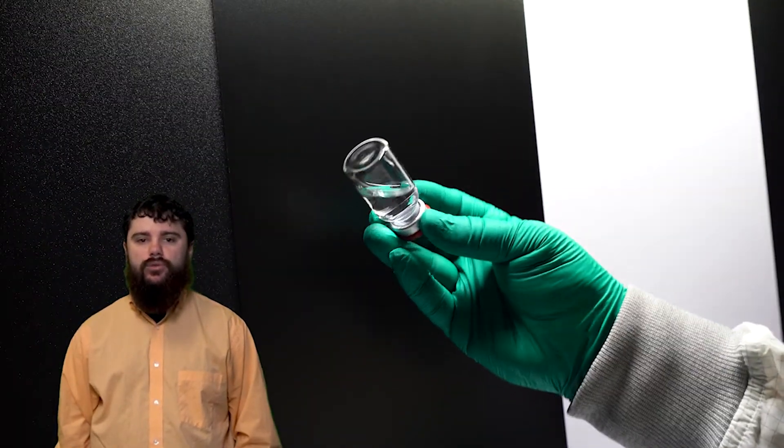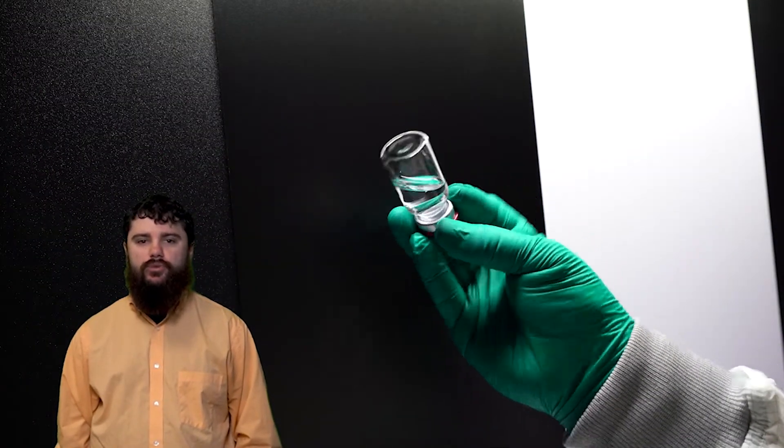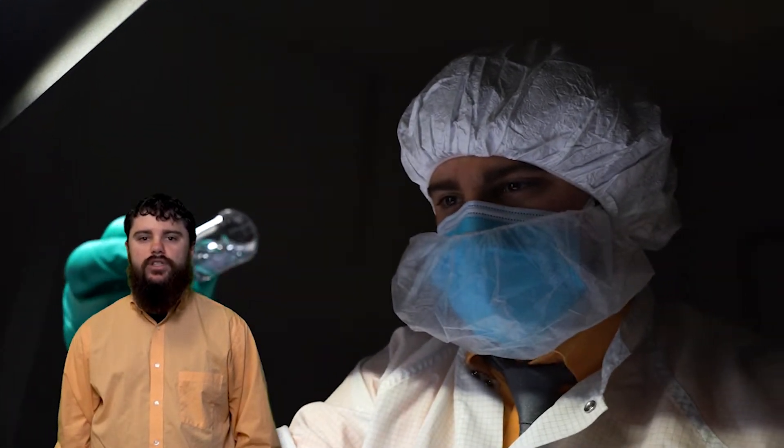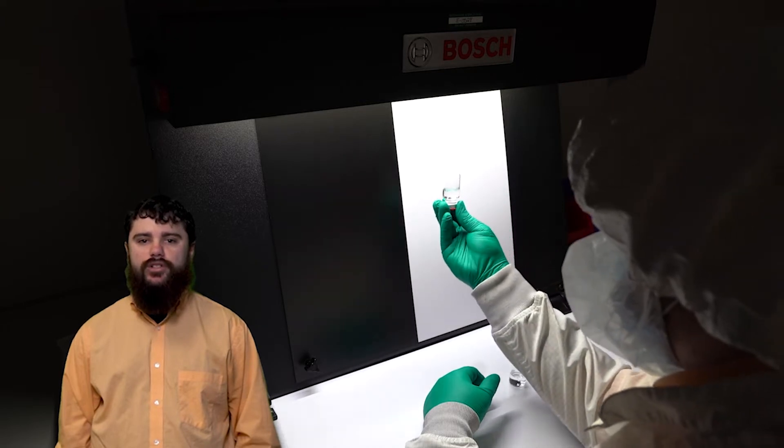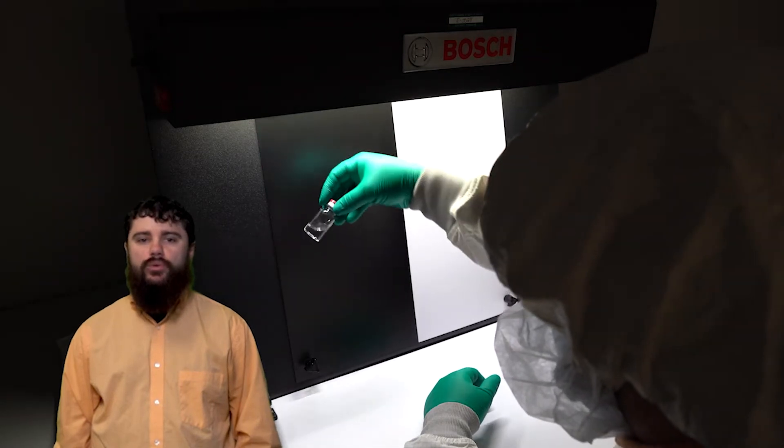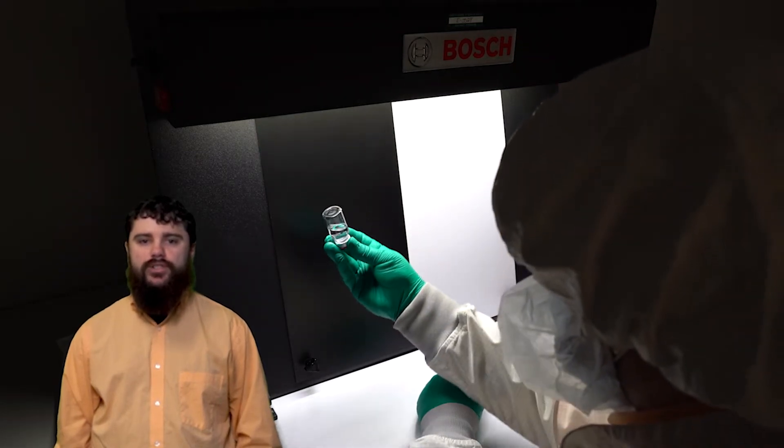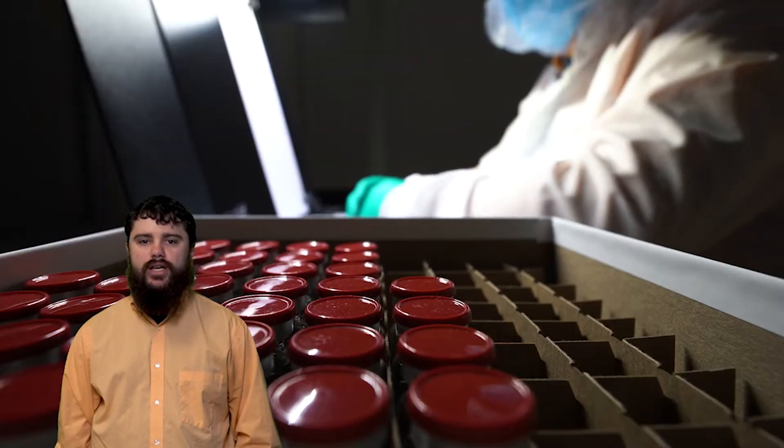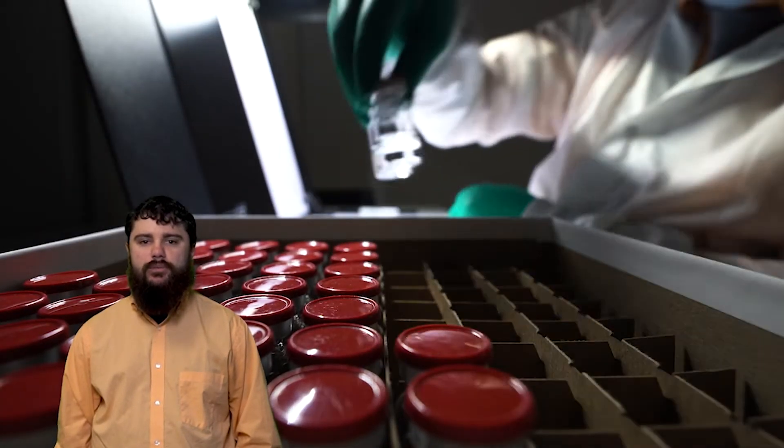Every vial, syringe, or cartridge of medicine we fill that will be released for human use must be individually inspected. To do this, we will examine each vial, syringe, or cartridge in front of a white background for five seconds, and a black background for five seconds. We will also swirl the containers to force any floating foreign material to move in the solution so we can better detect it. Each unit is examined for 10 seconds.